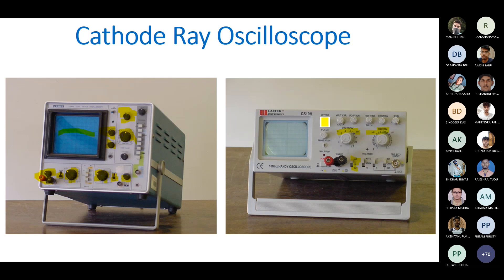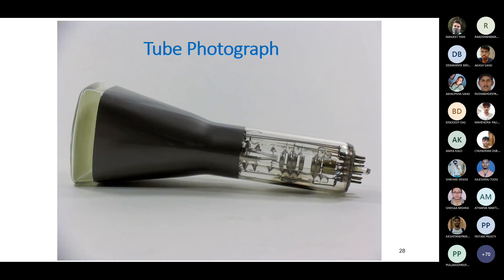Time per division, voltage position, and time position controls are all present. Focusing and intensity adjustments are also available. None of these things are complicated — the operations are straightforward. Now let's look at the CRT (cathode ray tube) which is also part of the oscilloscope.